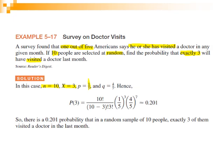The number of random samples N equals 10, and X equals 3 since we want exactly three who visited the doctor. Substituting into the binomial formula: [10! / ((10−3)! × 3!)] × (1/5)^3 × (4/5)^7, the result is 0.201. So the probability that in a random sample of 10 people exactly three visited a doctor is 0.201.